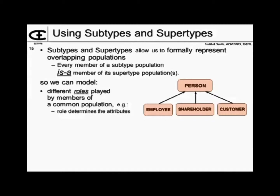In this example, I might have person, employee, shareholder, and customer. We notice there's a commonality across these three different roles, so we pull that out. The information that relates to person independently of which role they're playing, we store with person. Could a shareholder be an organization? Yes. Can there be multiple supertypes? Yes — notwithstanding that many systems don't allow that because they didn't want to handle the complexity.